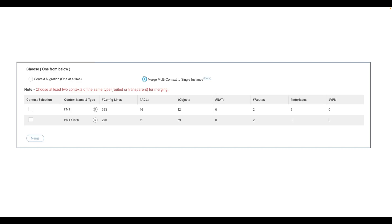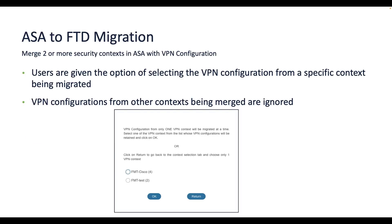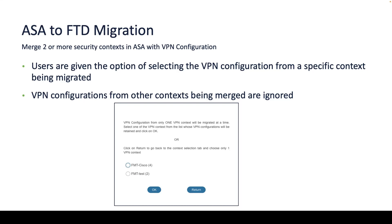When merging two or more contexts having VPN configurations, VPN configuration from only one context will be migrated, and the tool provides the option to the user to select which context's VPN configuration will be migrated. VPN configuration from other contexts are ignored.